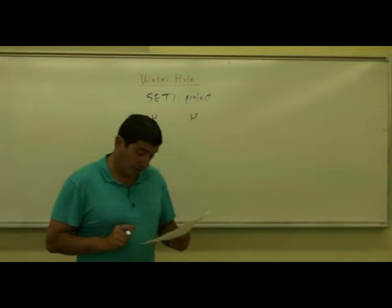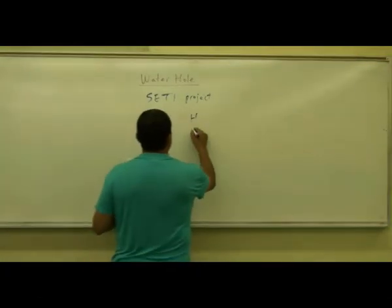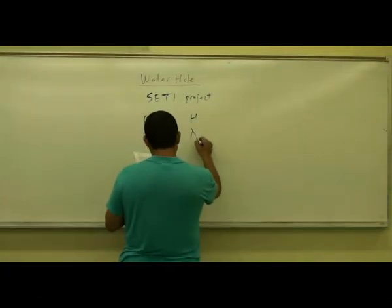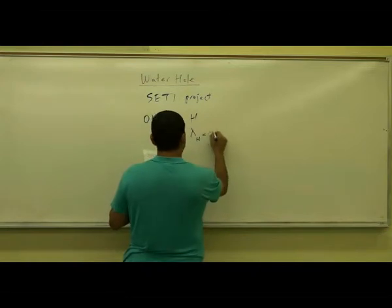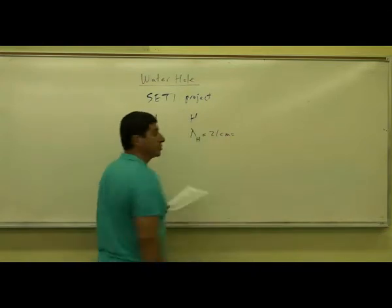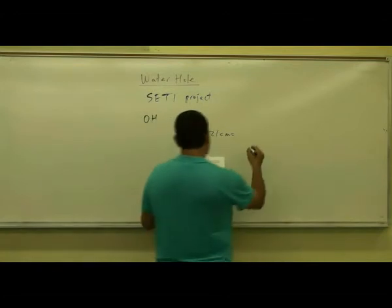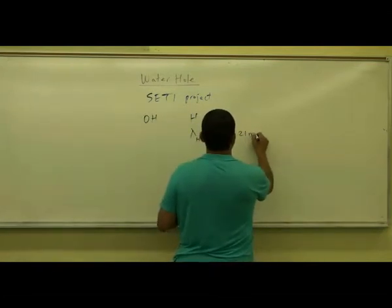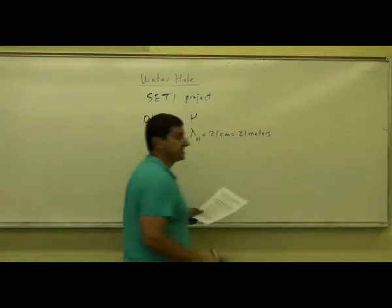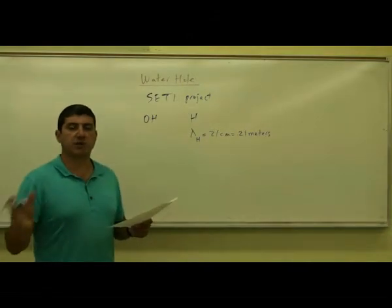The line of the element hydrogen is a wavelength of 21 centimeters. It's called a 21 centimeter line. And that is 0.21 meters. So it has a wavelength of 0.21 meters.